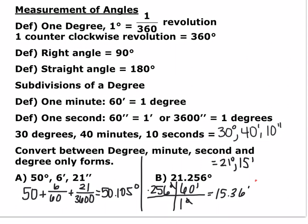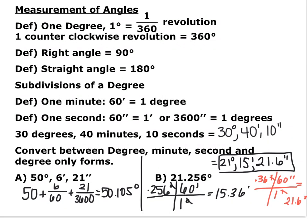We do another unit conversion: 0.36 minutes times 60 seconds per minute gives 21.6 seconds. At the seconds level we can have a decimal, so 21.6 seconds is fine. Therefore, 21.256 degrees equals 21 degrees, 15 minutes, and 21.6 seconds.